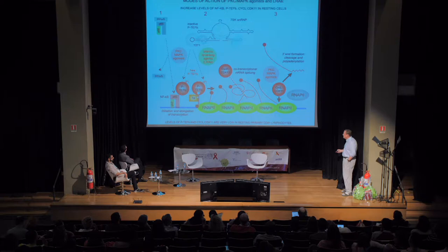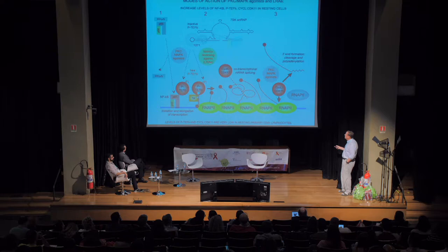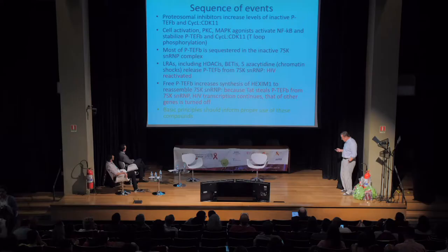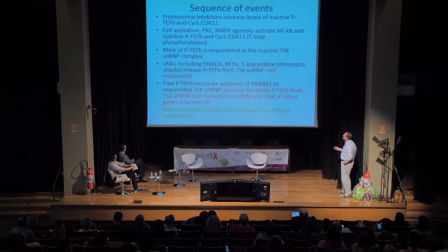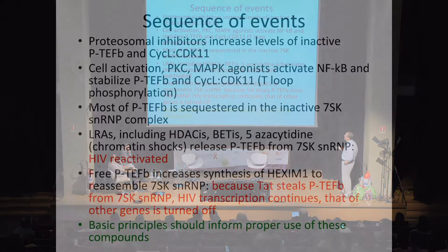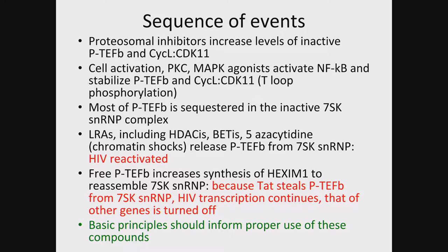The way latency reversing agents actually work is by converting the inactive complex of P-TEFb — from the inactive form to the active form — and not through modification of chromatin or the epigenetic landscape where HIV is found. To optimally activate the virus, you would first stabilize these transcription complexes with proteasomal inhibitors. Then you would phosphorylate the T-loop of these kinases to make them active. Then you would release P-TEFb from the 7SK inactive complex, and finally you would be able to activate HIV transcription.